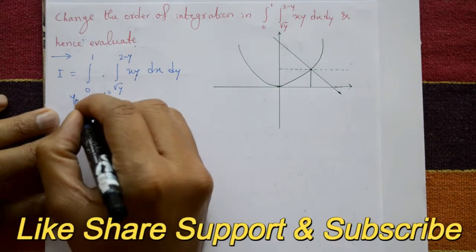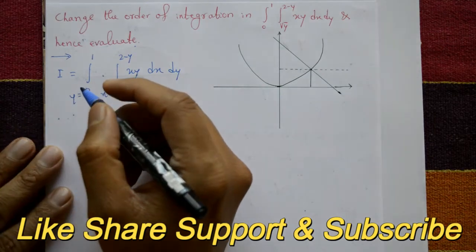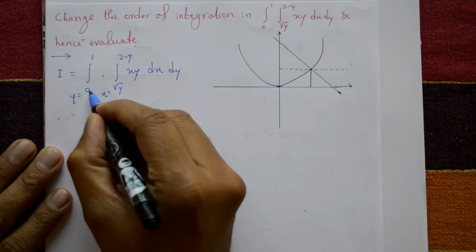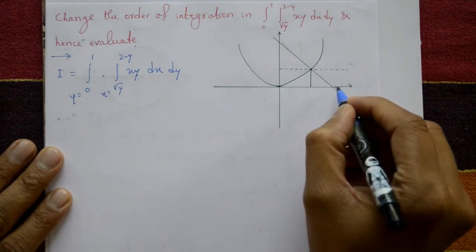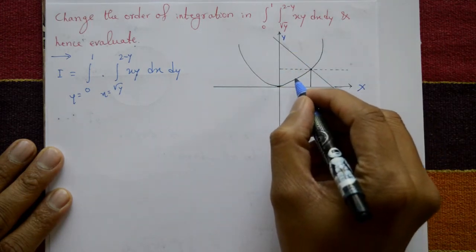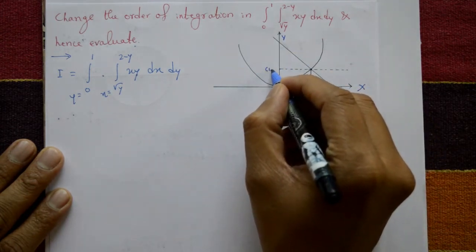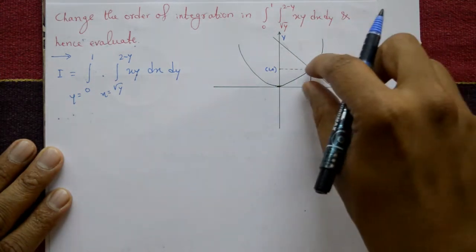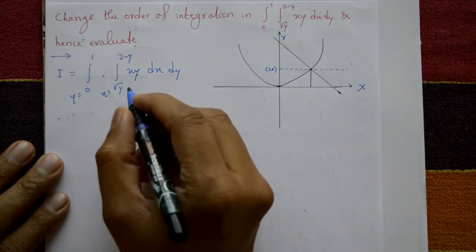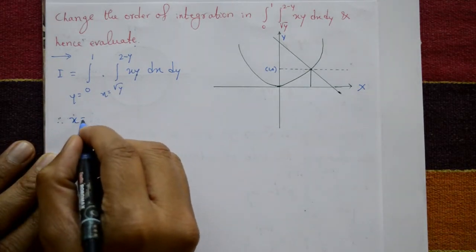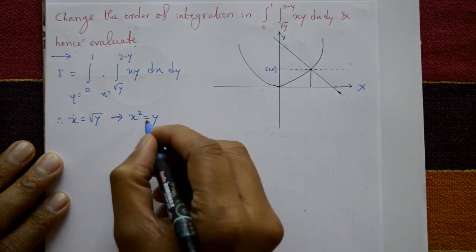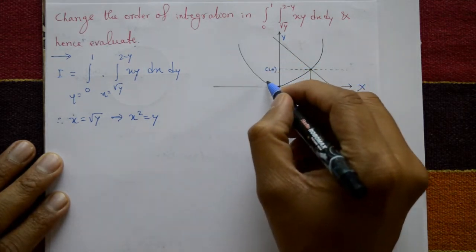After dy, the outer limit y goes from 0 to 1. Now see the diagram. On the x-axis, y = 0; on the y-axis, y goes from 0 to 1, giving point (1, 0). y = 1 is a line parallel to the x-axis. Now, x = √y — squaring both sides gives x² = y, which is a parabola symmetric about the y-axis.